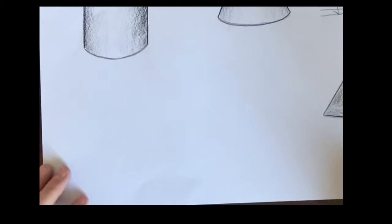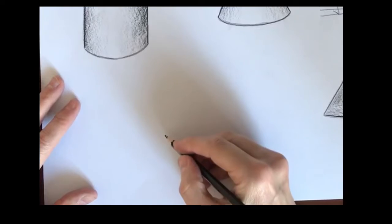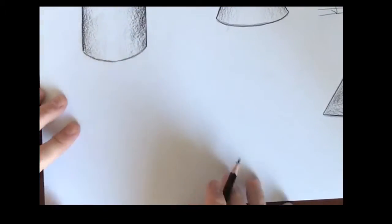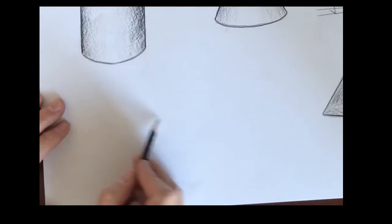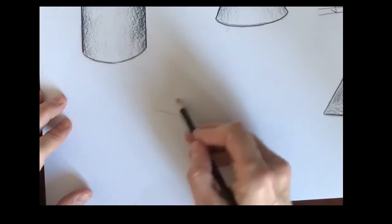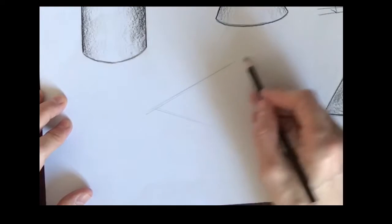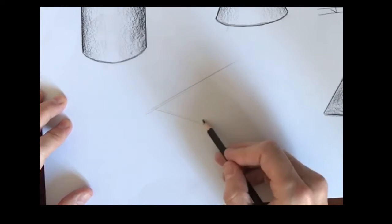This video will demonstrate how to sketch and then render a concept for a toaster. The first thing I'm going to do is use the diamond technique to sketch a box which will be the length and width of the toaster.